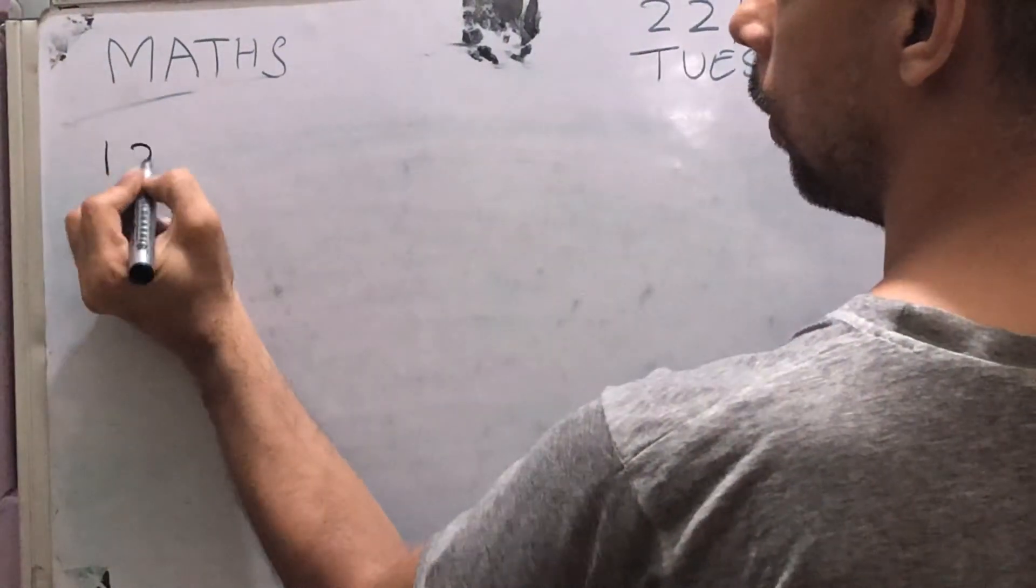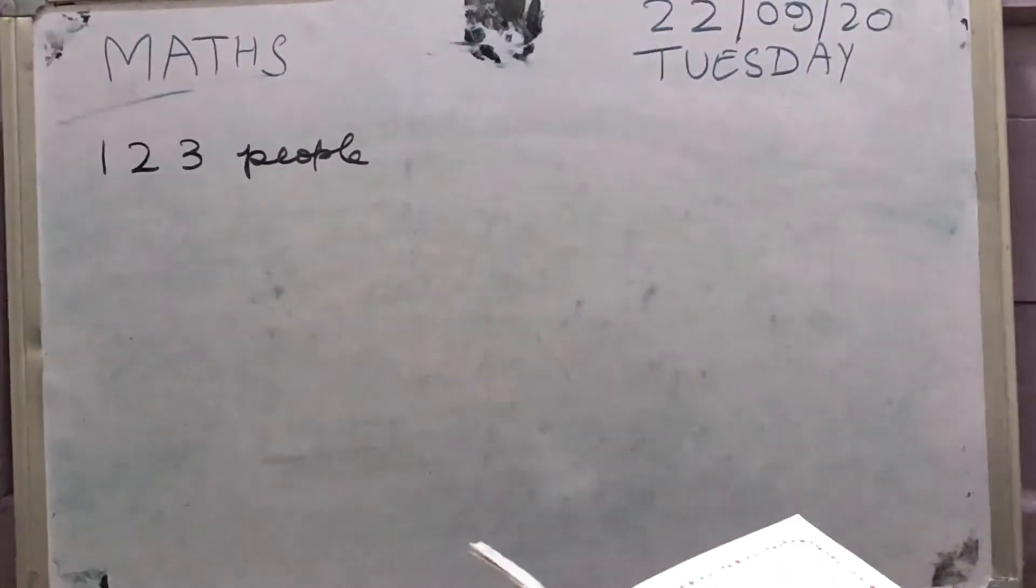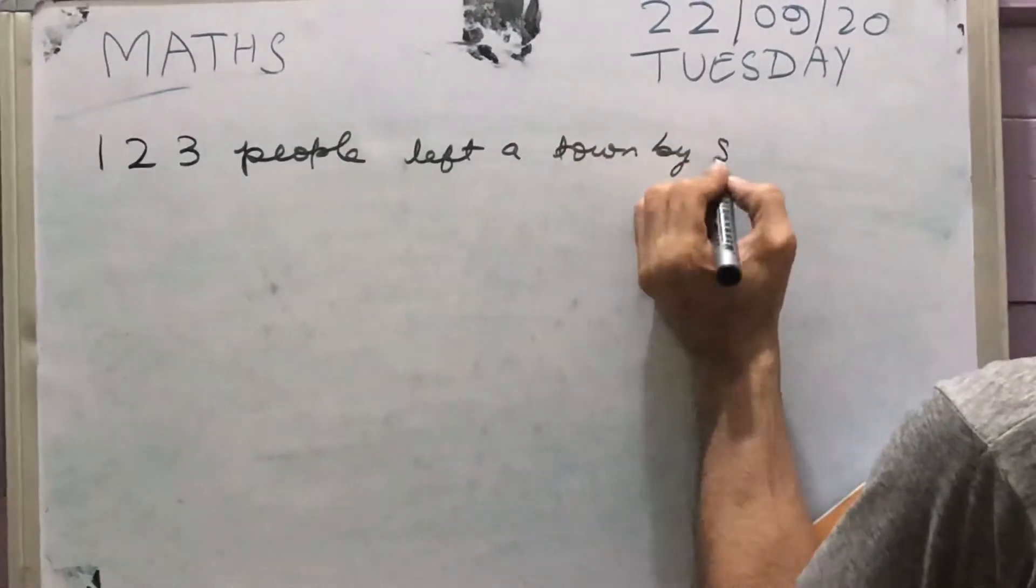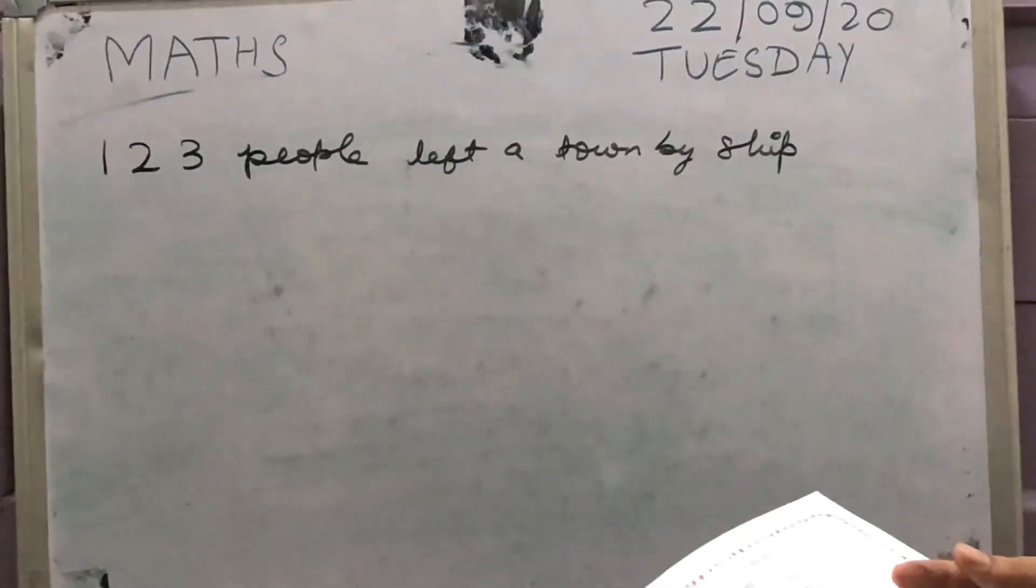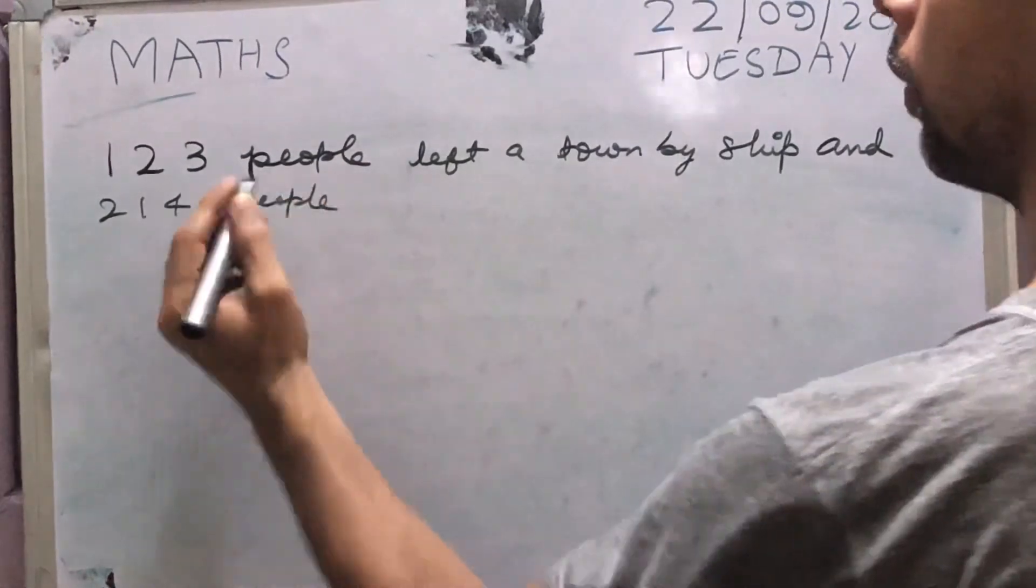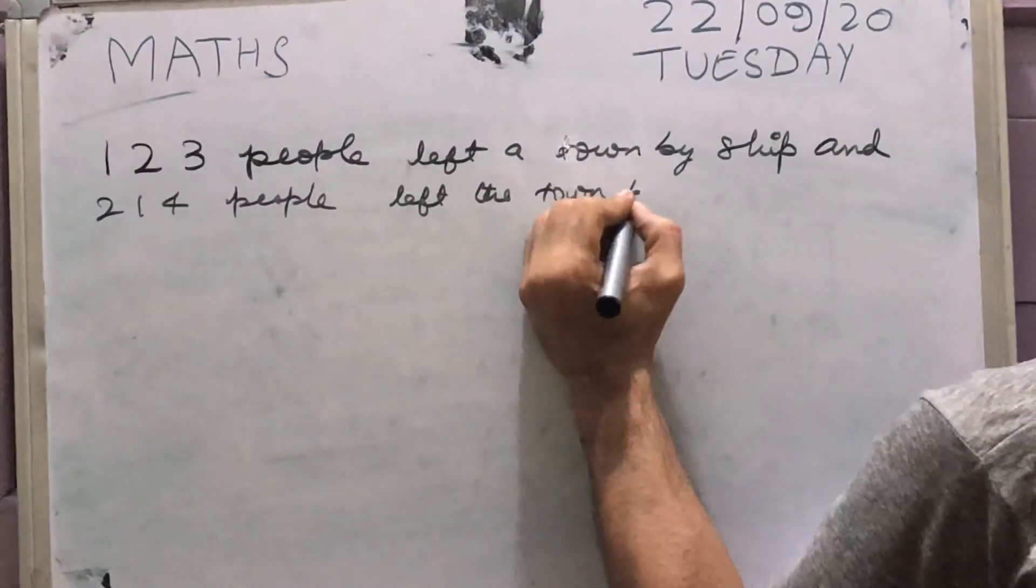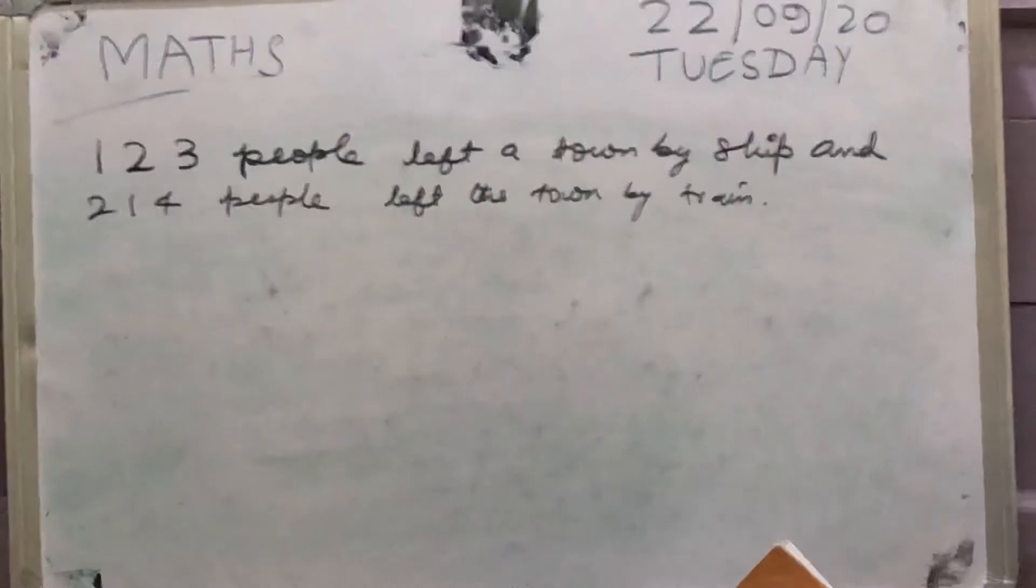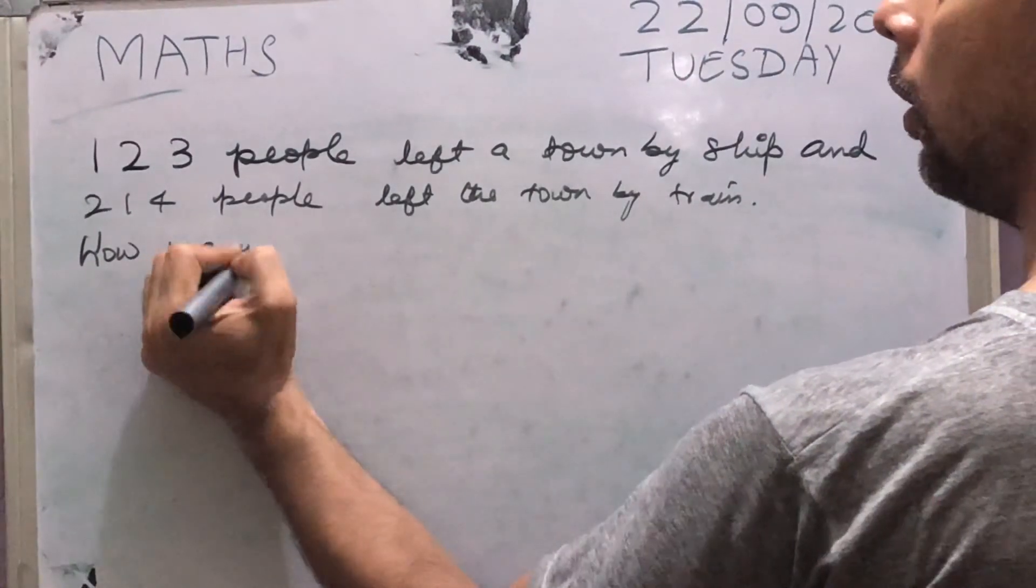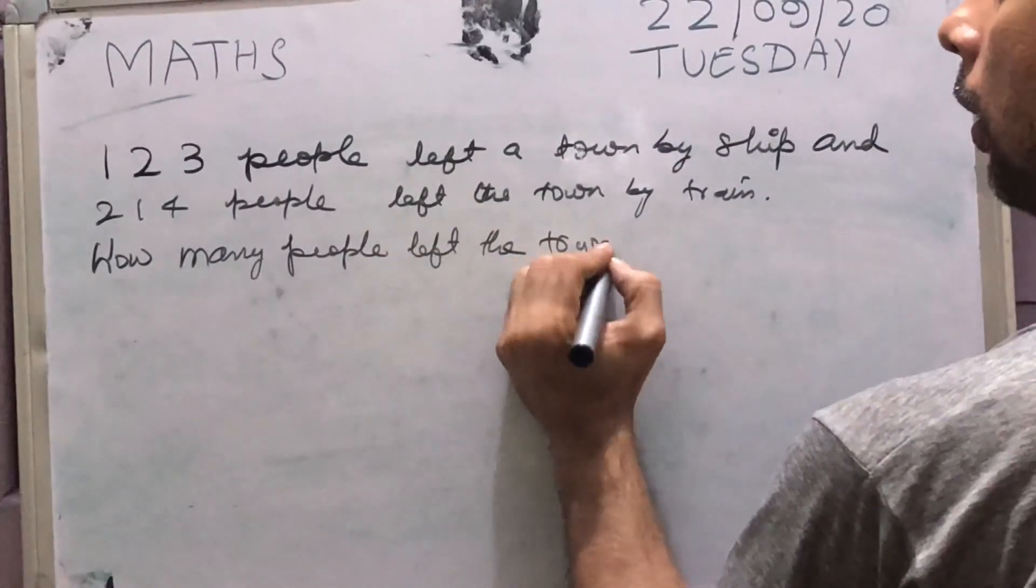I will write it down for you. 123 people left a town by ship. And 214 people left the town by train. How many people left the town?